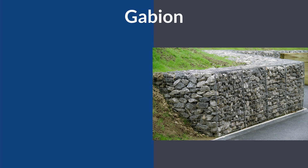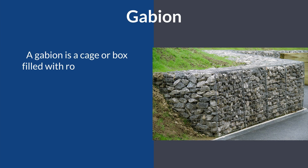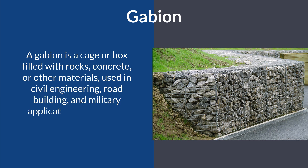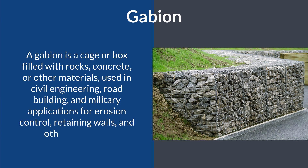Number fifteen: gabion. A gabion is a cage or box filled with rocks, concrete, or other materials used in civil engineering, road building, and military applications for erosion control, retaining walls, and other purposes.